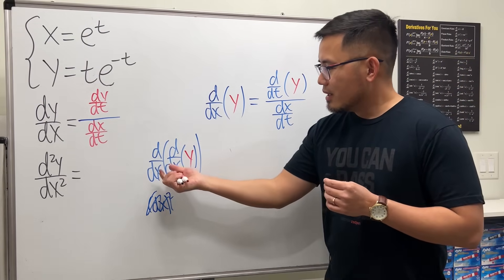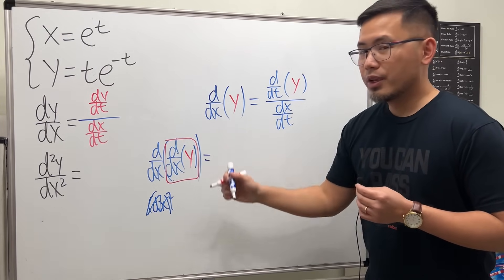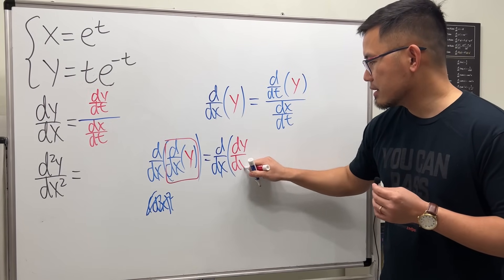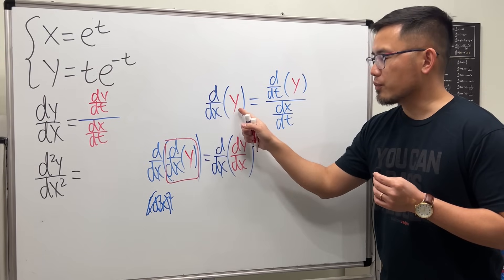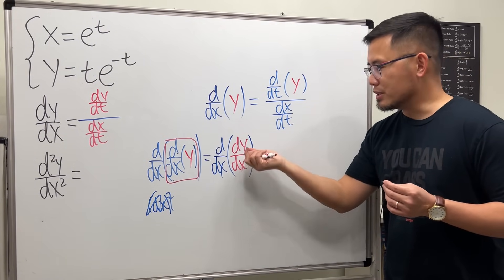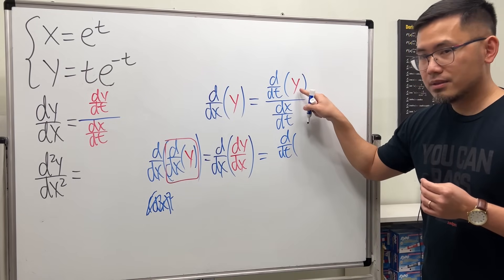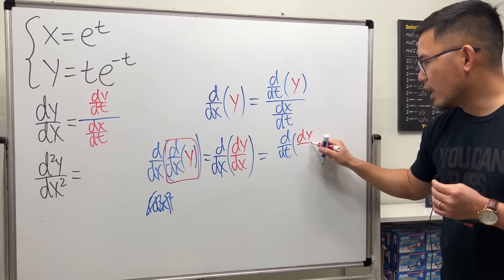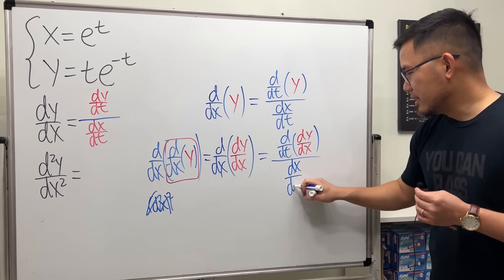What do we do? Well, differentiating y twice is the same as taking the derivative of the first derivative. This is where the magic is. Earlier, when I did d/dx of y, I put the y there. Right now, we are doing d/dx of dy/dx — all we have to do is put dy/dx in that spot. So as a formula, we get d/dt of whatever dy/dx is, divided by dx/dt.